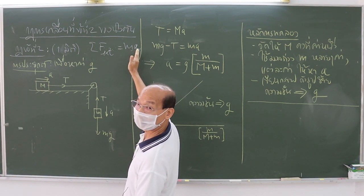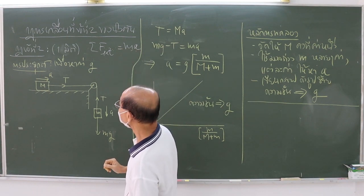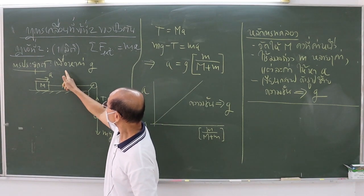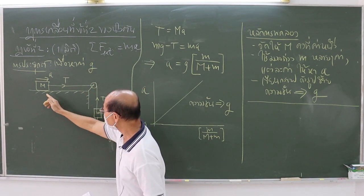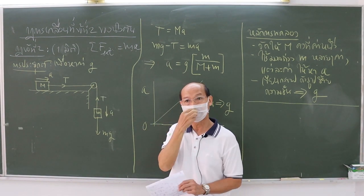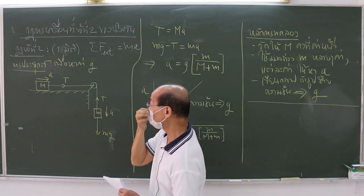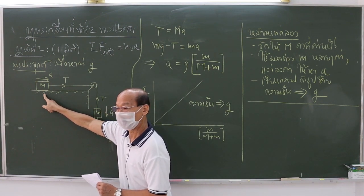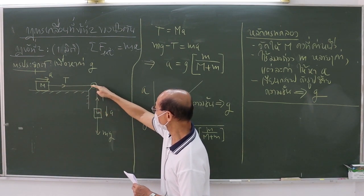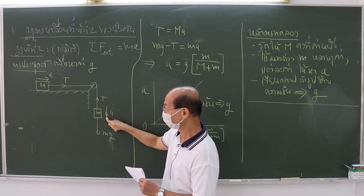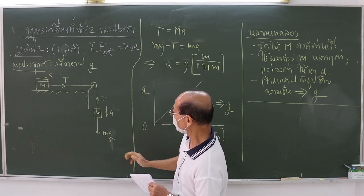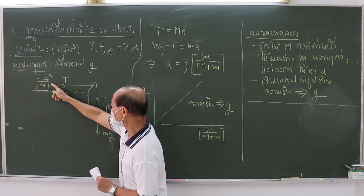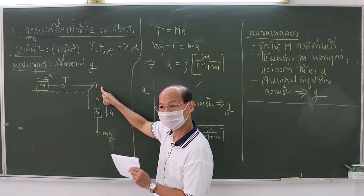Now, we apply this equation to the motion of a system as shown in the figure. We want to use this motion to measure the gravitational acceleration of the Earth. The system consists of a mass capital M and a smaller hanging mass m. The two are connected with a thin rope passing over a pulley. We assume that there is no friction between the mass capital M and the horizontal floor, and the pulley is also frictionless.